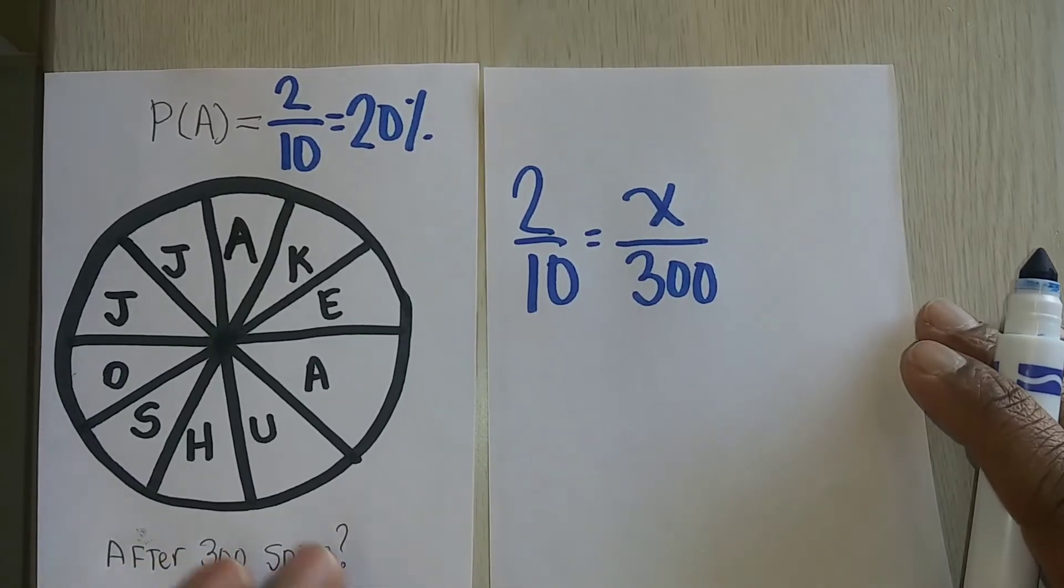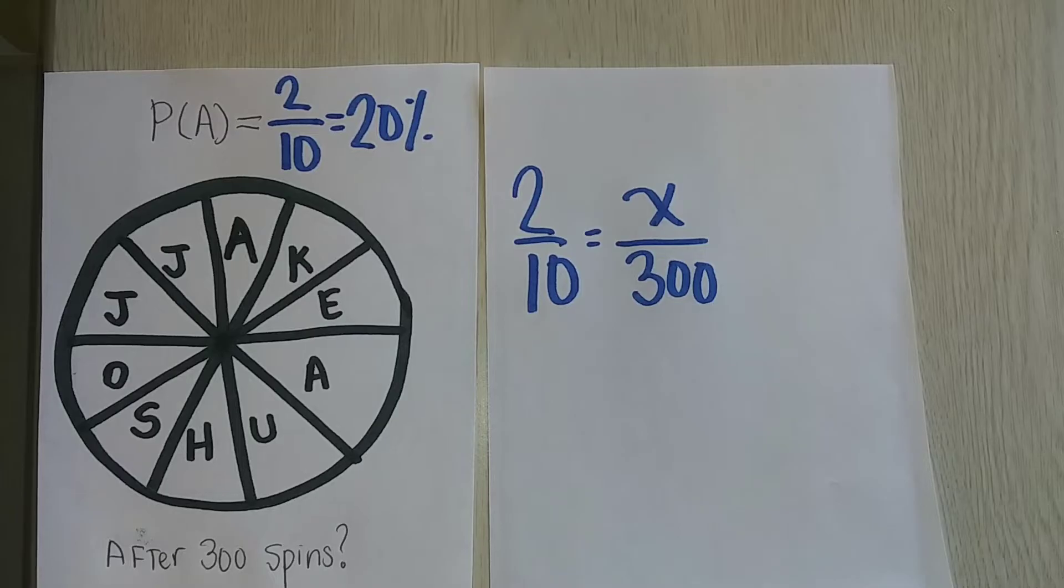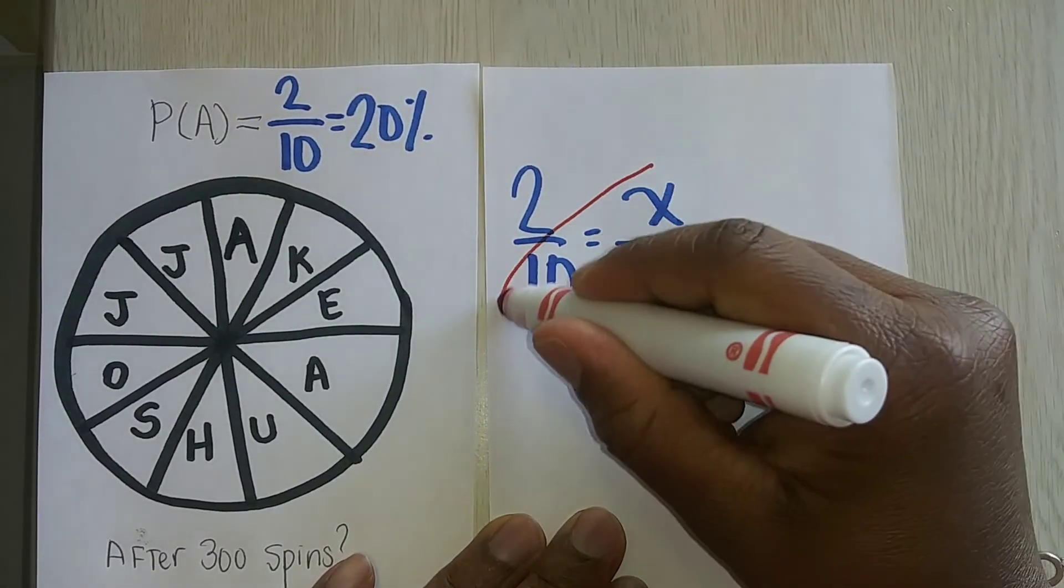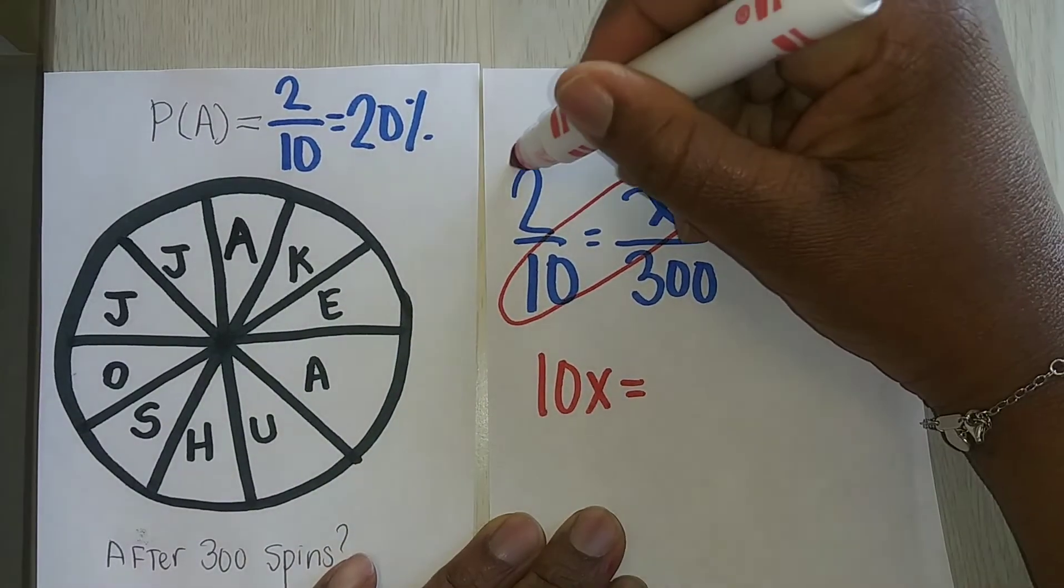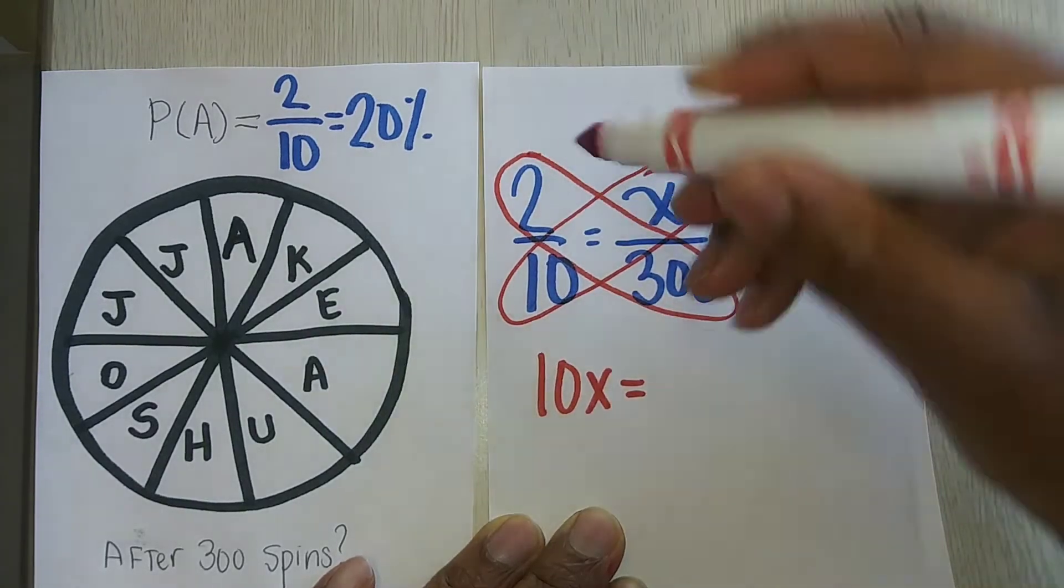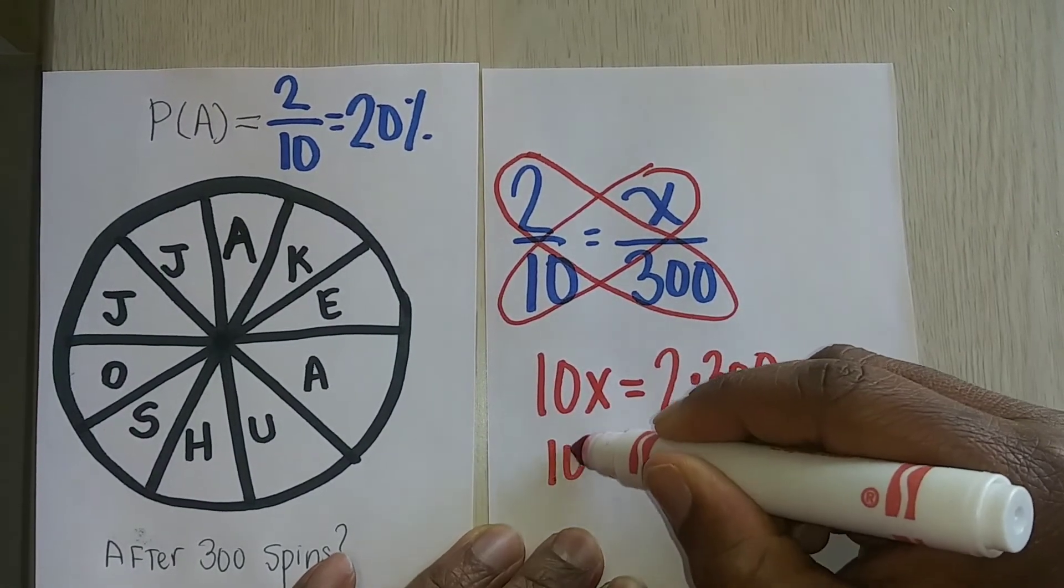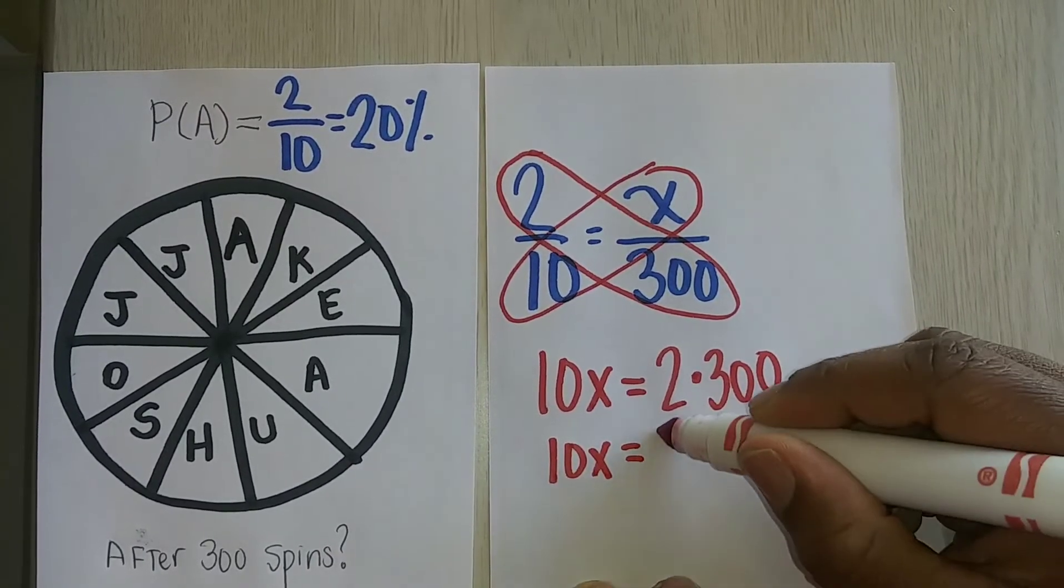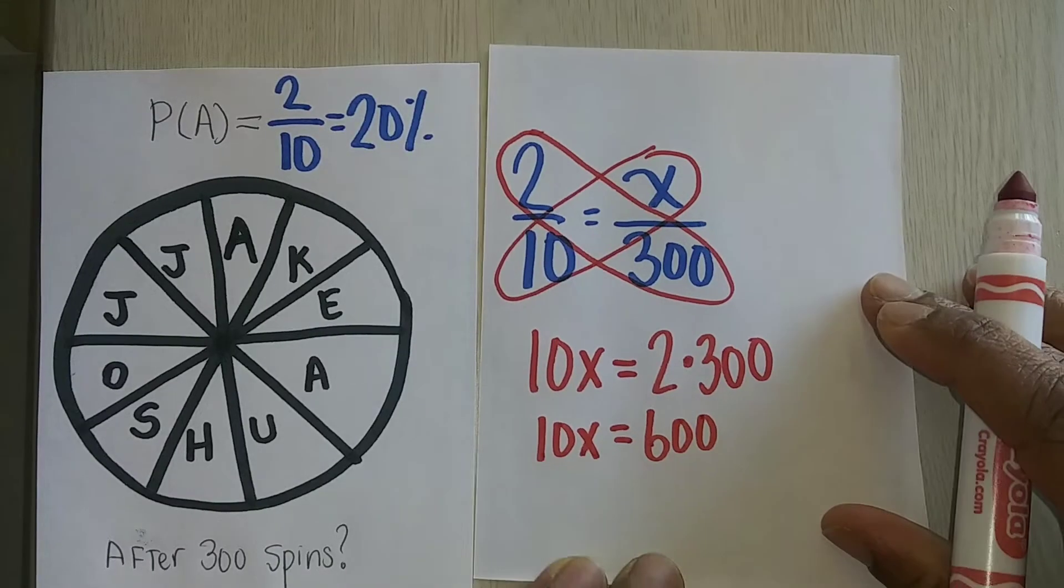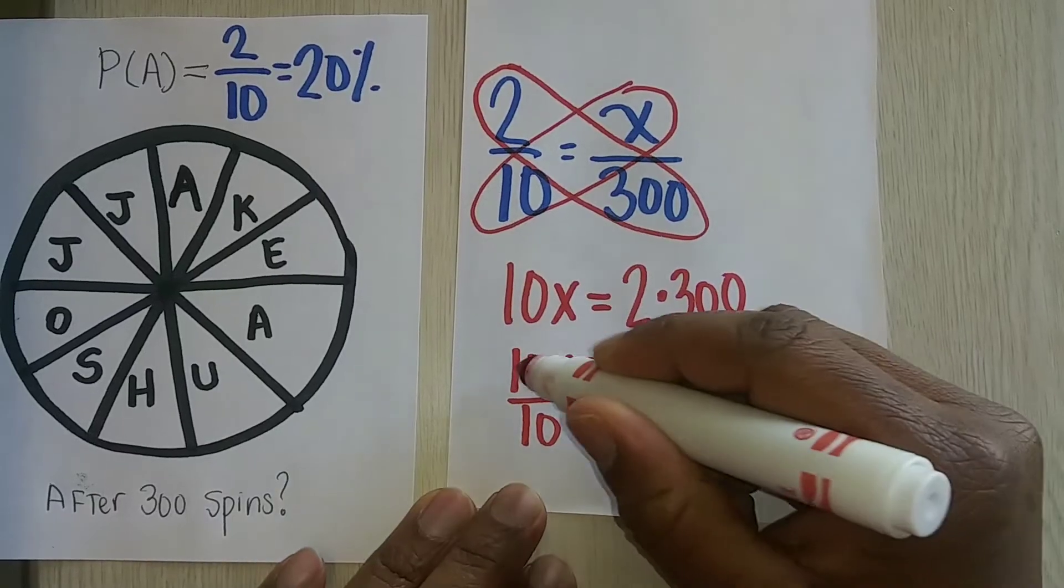Now, this is where knowing proportions come in handy. In order to solve this, I can cross multiply or I can just use multiplication. 10 times X is 10X, and that's the same as 2 times 300. You have to pull out what you know about solving proportions. 2 times 300 is 600. Now, to isolate this X, I divide both the left side and the right side by 10.